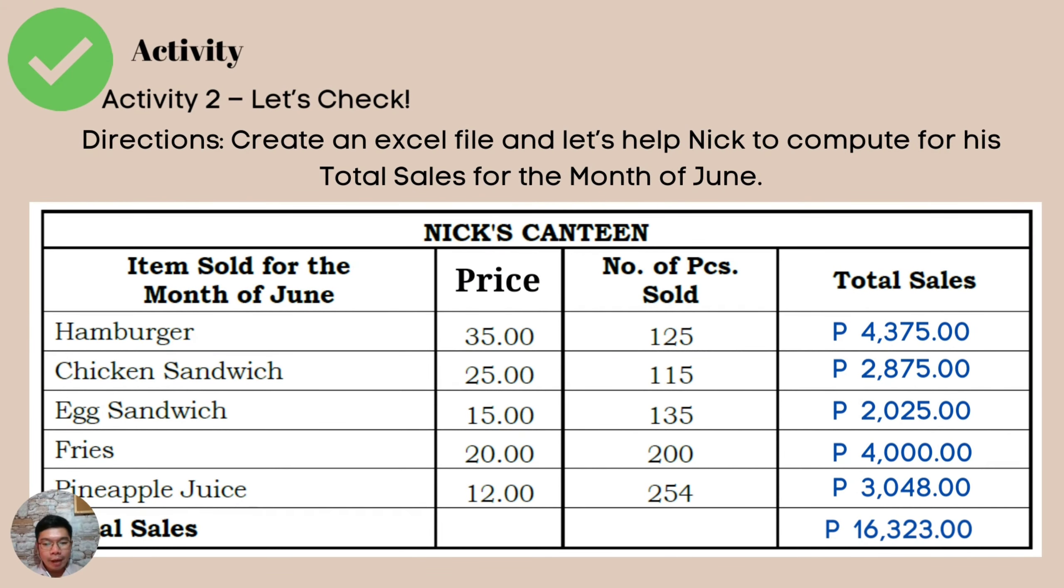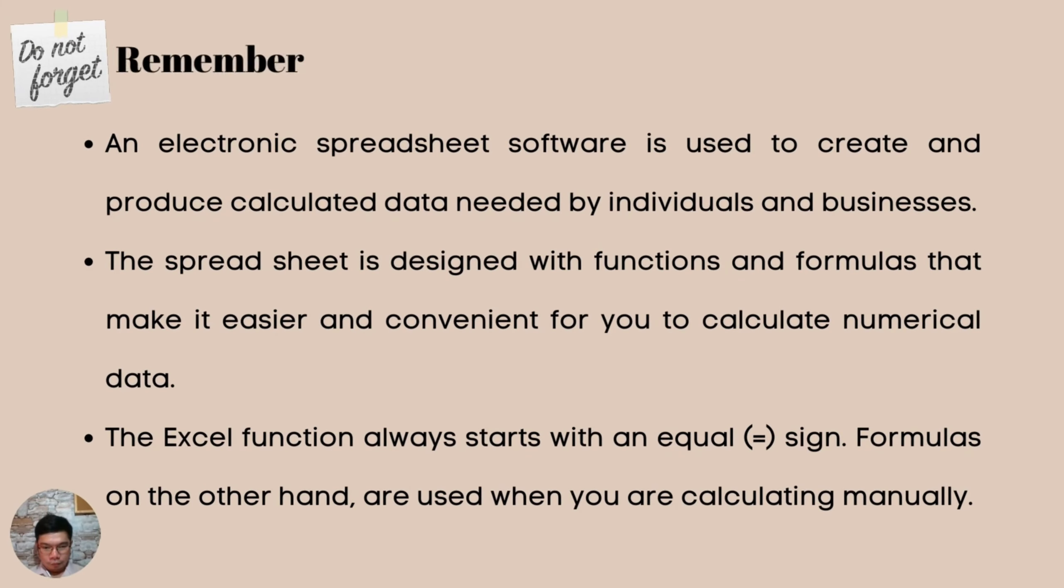We have 4,375 total sales for the hamburger. And, for the chicken sandwich, we have 2,875. For the egg sandwich, we have 2,025 pesos. For the fries, we have 4,000. And, for the pineapple juice, we have 3,048. And, once you sum it up, we have a total of 16,323.